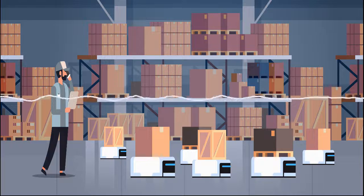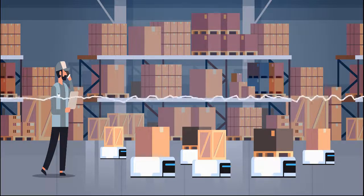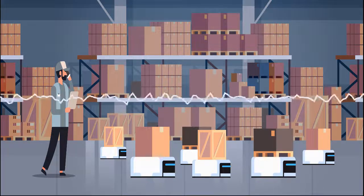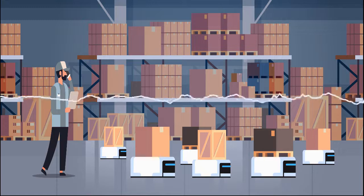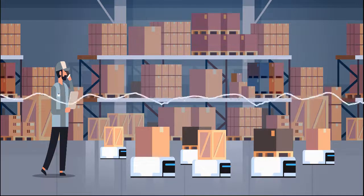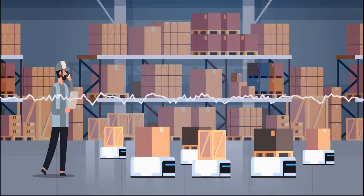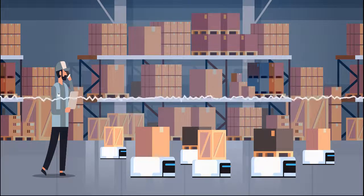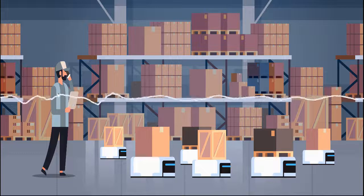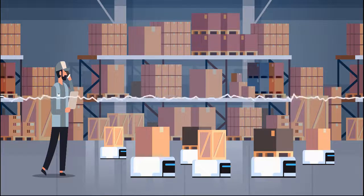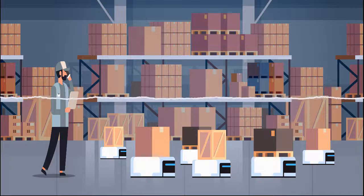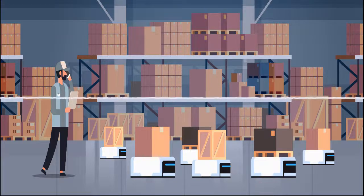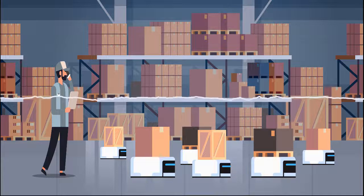I did some quick math and calculated that by reducing the dock-to-stock time by 75%, the company could reduce its inventory by $6 million. I then asked, wouldn't it make sense to spend $2 million to take $6 million out of inventory, or to reduce inventory carrying costs by $2 million per year at the 33% inventory carrying rate?